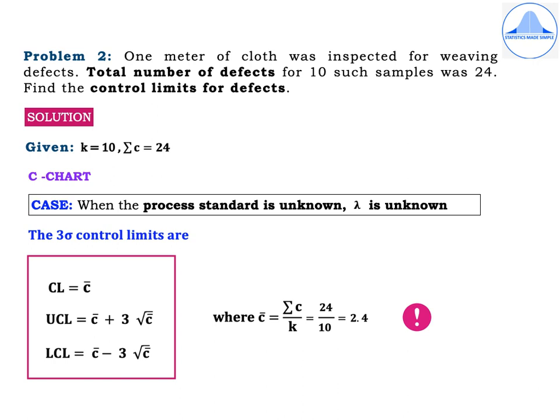The total number of samples is 10. Given K = 10, the total number of defects is 24, that means summation C = 24, where C stands for the number of defects. For the C chart, the case is when the process standard is unknown, that is lambda is unknown. The 3-sigma control limits are: CL = C-bar, UCL = C-bar + 3√(C-bar), and LCL = C-bar − 3√(C-bar), where C-bar = ΣC / K = 24/10 = 2.4.